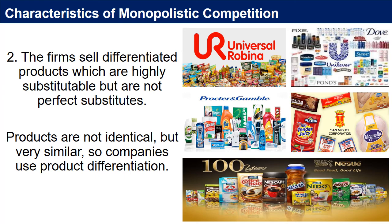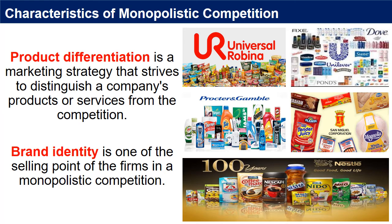For example, shampoo products — there are many variants of shampoo to choose from, like for hair straightening, anti-dandruff, or smooth and silky hair. 3. Product differentiation is a marketing strategy that strives to distinguish a company's products or services from the competition. The product differentiation may be in color, packaging, store location, store design, store decorations, delivery, service, or anything to make the product stand out. Brand identity is one of the selling points of the firms in a monopolistic competition.